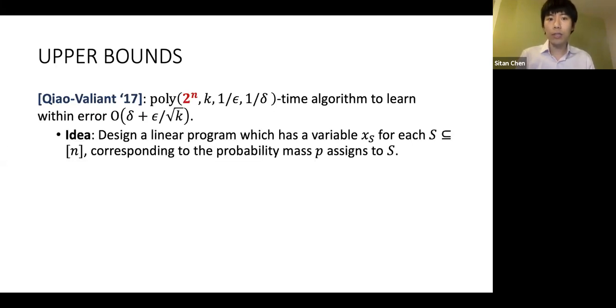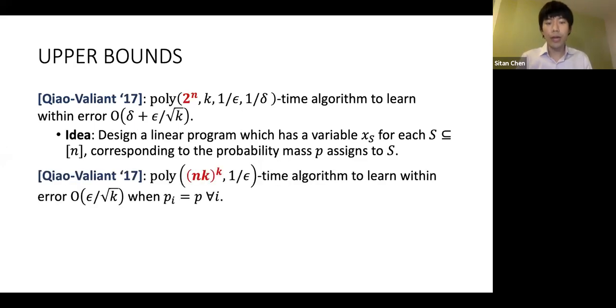They need to depend exponentially on the domain size because they design a linear program with a variable for each subset of the domain. The variable corresponds to the probability mass that the true distribution should assign to that subset.